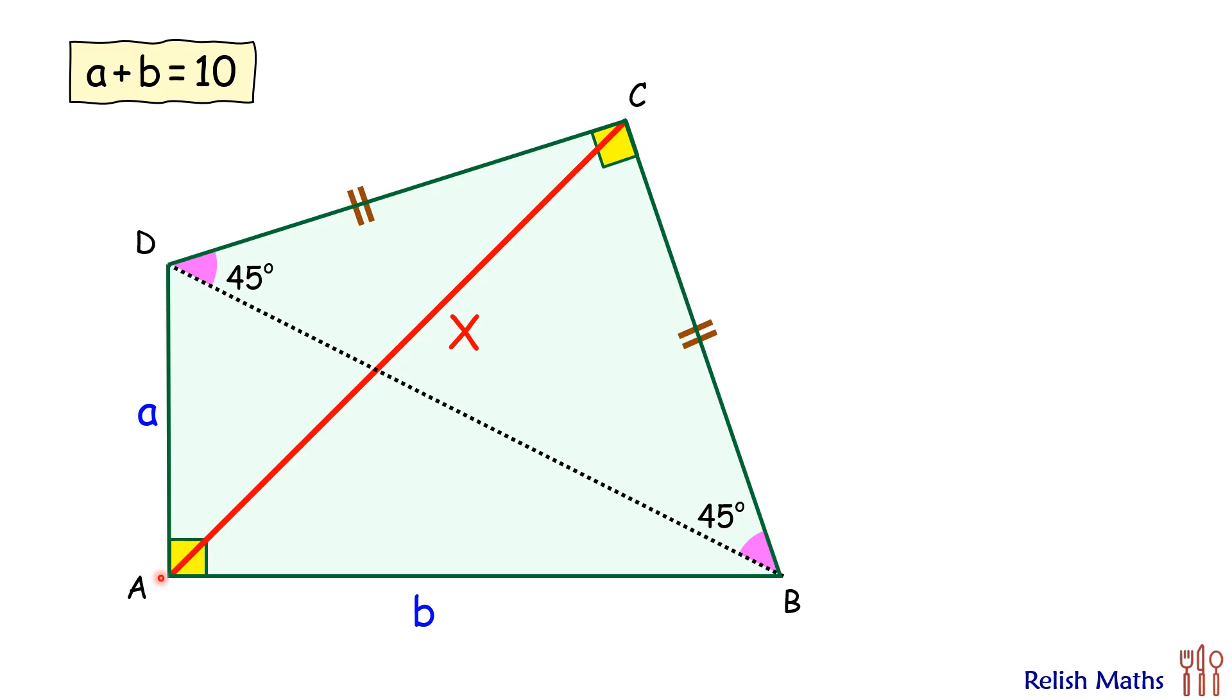Also, angle A and angle C, their sum is 180 degrees. And we know that in a quadrilateral, if opposite angles are supplementary, then it's a cyclic quadrilateral, or basically we can draw a circle passing through all four vertices. Now let's look at CD - CD is a chord in the circle.